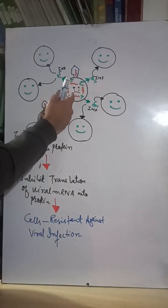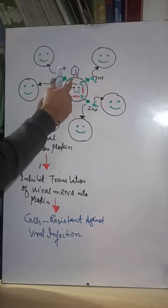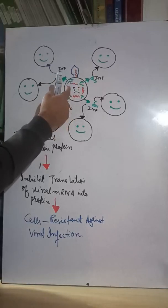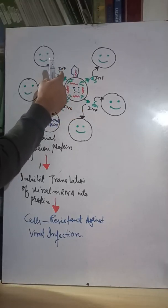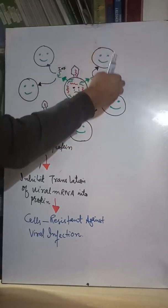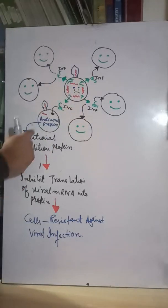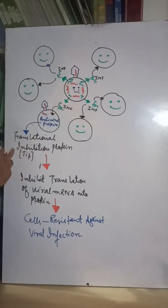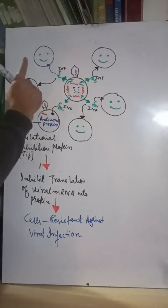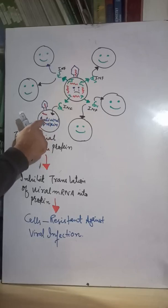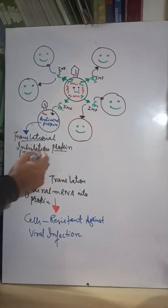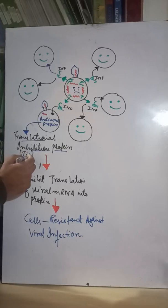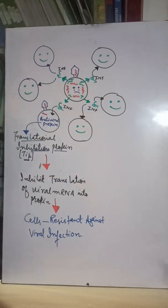Let us see how this works. For example, here is a cell infected with a virus — a viral genome is present inside it. This virus-infected cell releases interferons, and these interferons diffuse into the neighboring cells. In response to the interferons entering the neighboring cells, those cells are going to form some important proteins called antiviral proteins, or translational inhibiting proteins (TIPs).